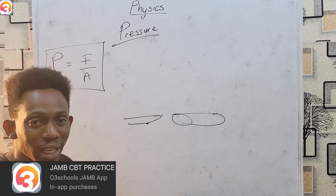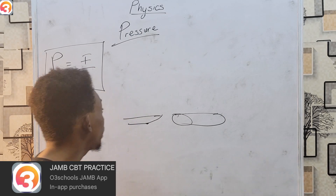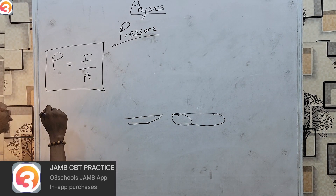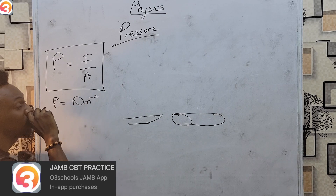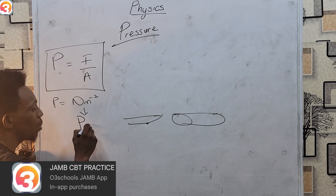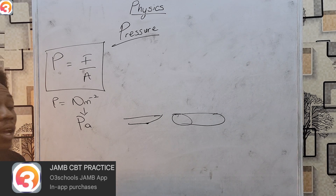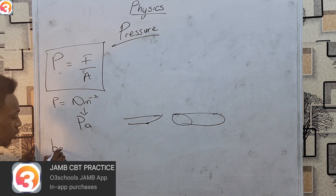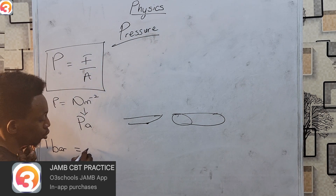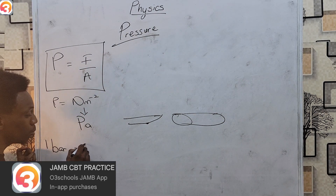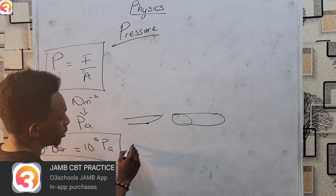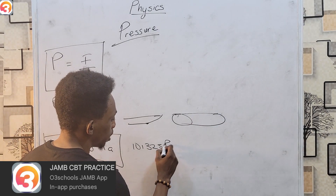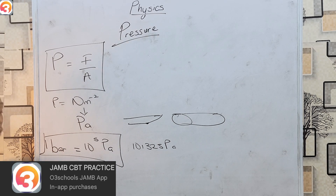That is the basic idea of pressure. The unit of pressure is Newtons per square meter, also referred to as Pascals. There is another unit known as bars — one bar equals approximately 10 to the power 5 Pascals, or in full form, 101,325 Pascals. In most exam cases it is sufficient to approximate to 10 to the power 5.